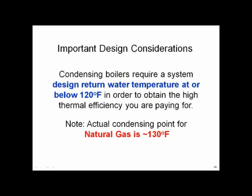On the design side, Chris Edmondson's rule of thumb: stay below 120 on return water temperature. The actual condensing point for natural gas is probably around 130, but when you're really buying a condensing boiler and really want it to rain, let's just say 120 is a practical rule of thumb. There's nothing magical about 120, but we want that return water below 120 all the time to be as efficient as possible.